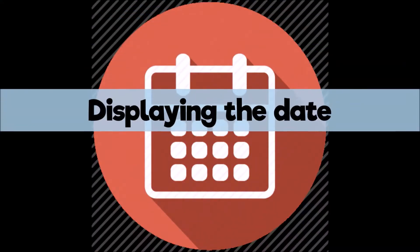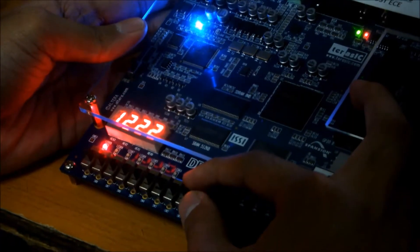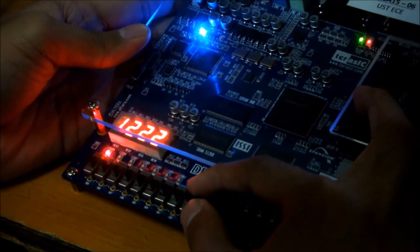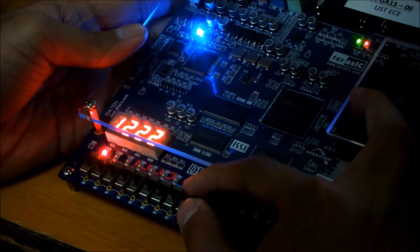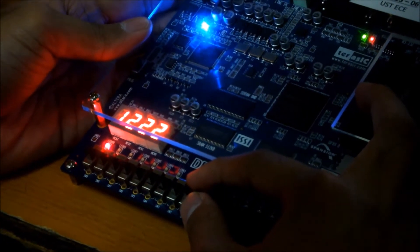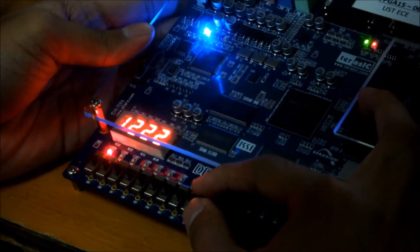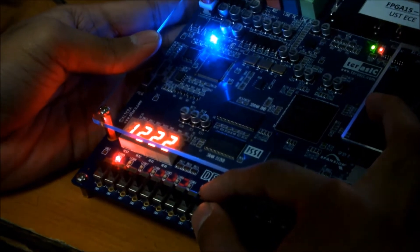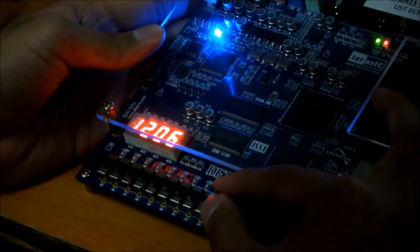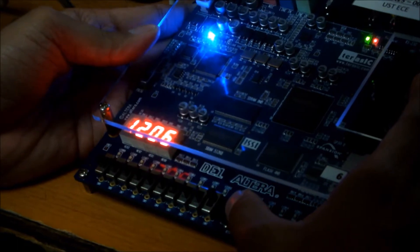That ends this demonstration. For the next part of clock display functions, it will be further discussed in the next segments. This segment discusses the date display feature of the project. Setting switch 1 to down and switch 0 to up will display the month and the day of the set date. Pressing key 3 will display the year.